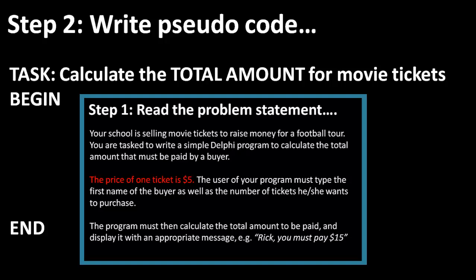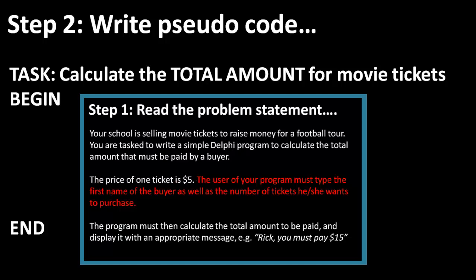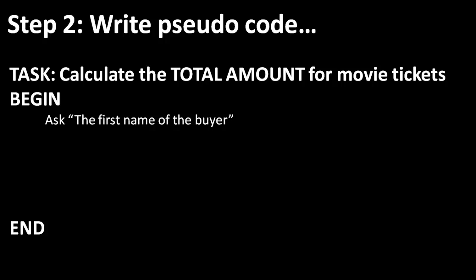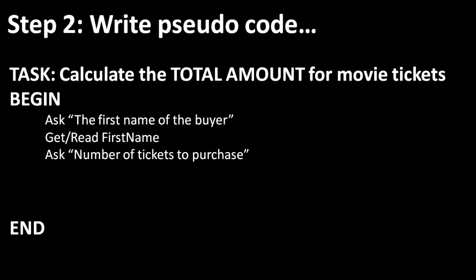The next fact I can extract is that a movie ticket sells for $5. I can make a mental note of that — the price will later be used to calculate the total amount. The next requirement reads: the user must type the first name of the buyer as well as the number of tickets he or she wants to purchase. Here I have two inputs: the buyer's first name and the number of movie tickets. In the zero code, I want to indicate that my program must ask the first name of the buyer, then get or read that value into a placeholder called first name. Similarly, the program must ask the number of tickets to purchase and read that value into a placeholder called number of tickets.